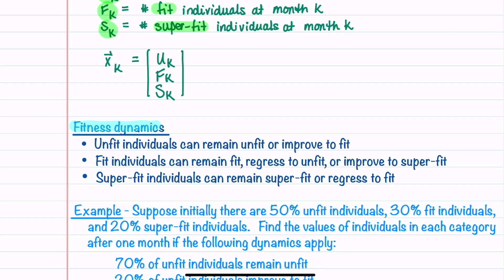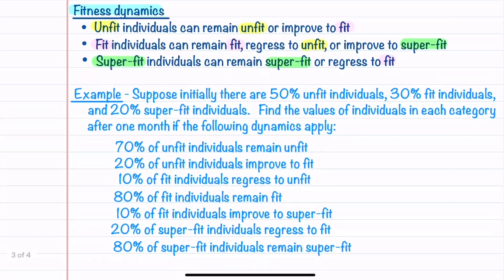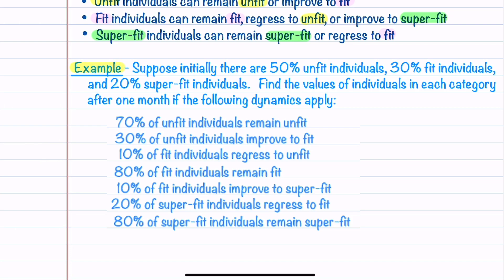Let's go over the fitness dynamics. Unfit individuals can remain unfit or improve to fit. Fit individuals can remain fit, regress to unfit, or improve to superfit. Superfit individuals can remain superfit or regress to fit — notice they cannot regress all the way to unfit. Now let's look at an example problem where we're given percentages across the three fitness levels. Initially: 50% unfit, 30% fit, and 20% superfit. We want to find the distribution of individuals in each category after one month.